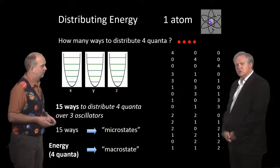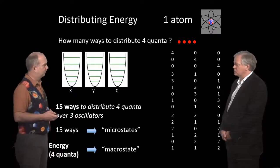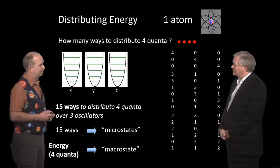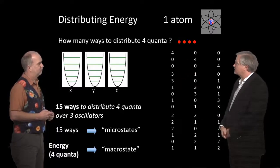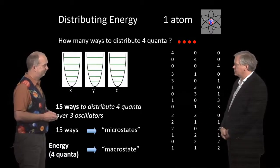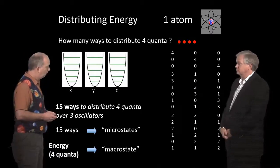So in this case, you can imagine you have a certain amount of energy, which is the four quanta, and you want to figure out how many different ways can our object express that energy, and it turns out 15 under this circumstance.